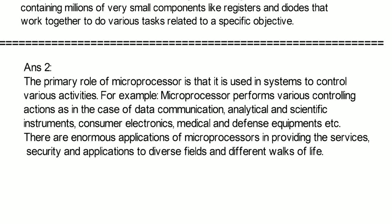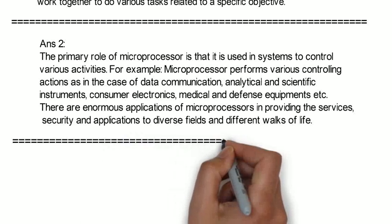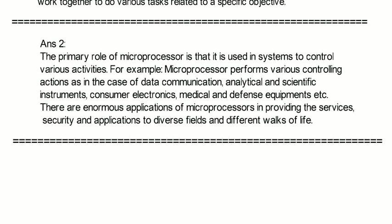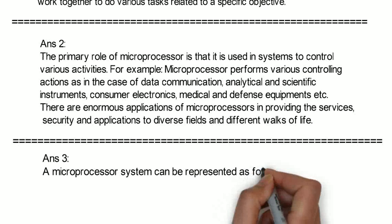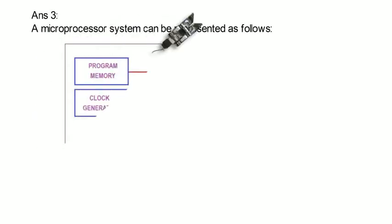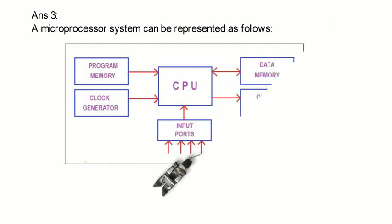Now we will study third question. How it is applied in systems? A microprocessor system can be represented as follows. As you see there are many blocks: program memory, clock generator, CPU, data memory, output ports, input ports. Now we will study these in detail.